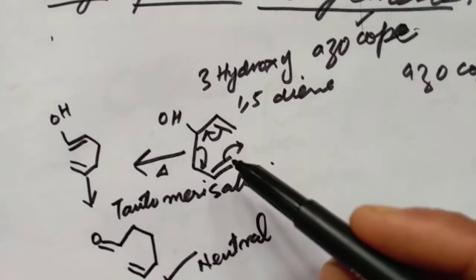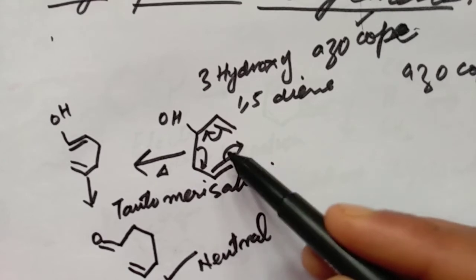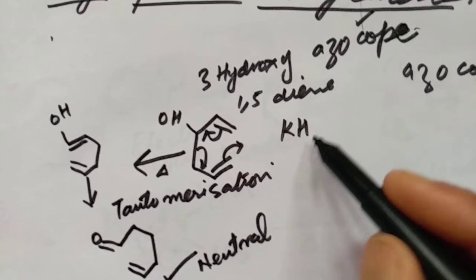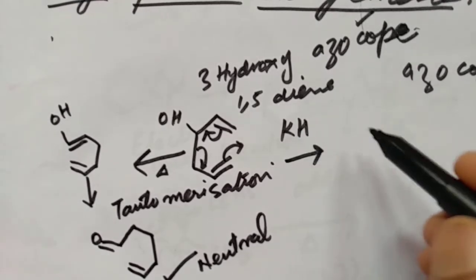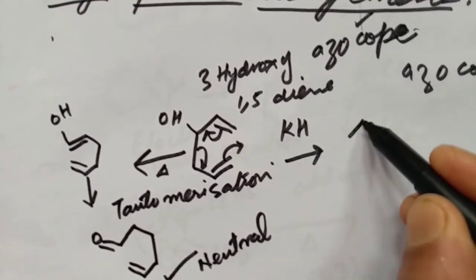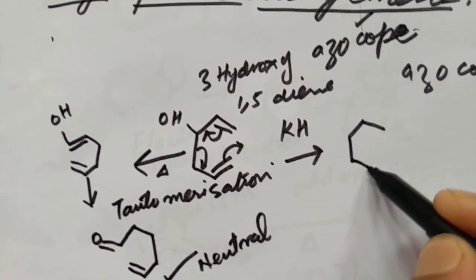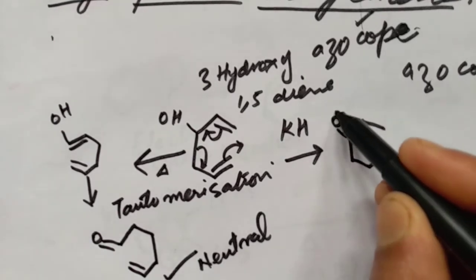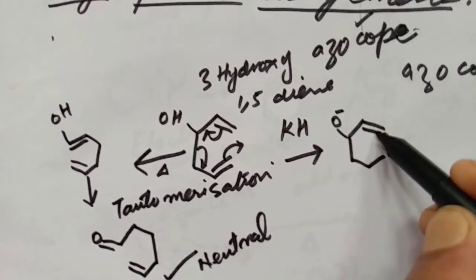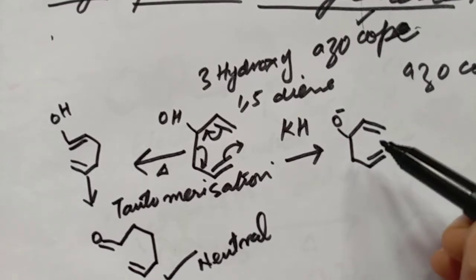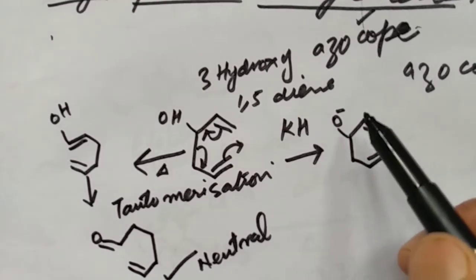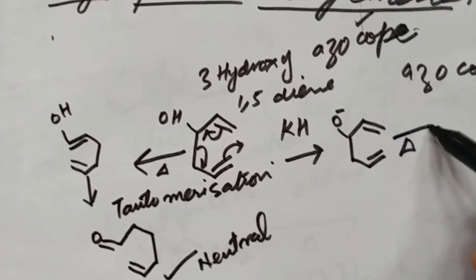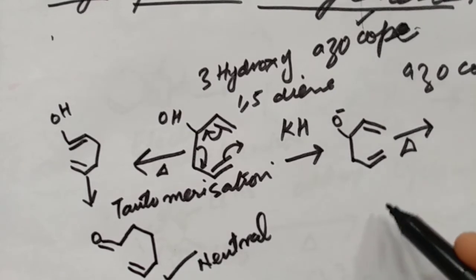If we treat this compound with base like KH, we get the alkoxide compound. If we heat this compound, we get the next intermediate.